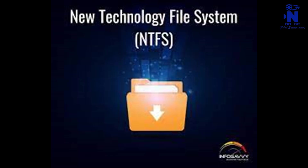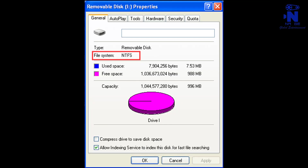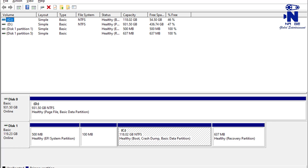NTFS is the modern file system Windows likes to use by default. When you install Windows, it formats your drive with the NTFS file system. NTFS has file and partition size limits that are so theoretically huge you won't run up against them. NTFS first appeared in consumer versions of Windows with Windows XP, though it originally debuted with Windows NT. NTFS is packed with modern features not available to FAT32 and exFAT. NTFS supports file permissions for security, a change journal that can help quickly recover errors if your computer crashes, shadow copies for backups, encryption, disk quota limits, hard links, and various other features. Many of these are crucial for an operating system drive, especially file permissions.